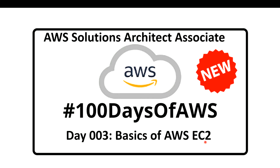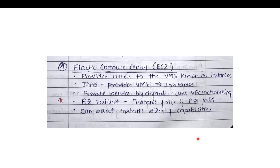So what is an EC2 instance? The full form of EC2 is Elastic Compute Cloud. As the name says, it is a compute machine — it provides access to virtual machines known as EC2 instances. It is a type of Infrastructure as a Service (IaaS) tool, meaning this EC2 service comes under IaaS and provides virtual machines. By default, EC2 is a private service and it uses VPC networking.